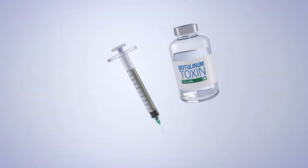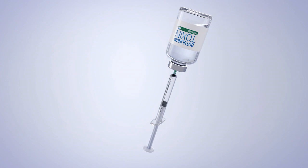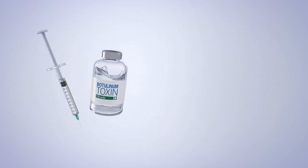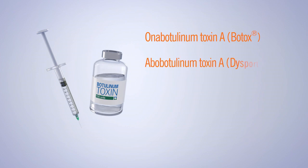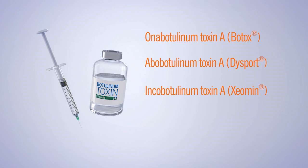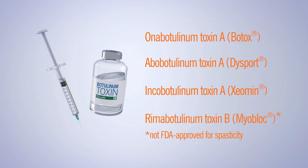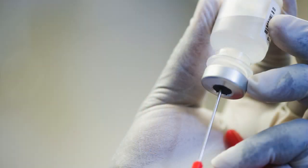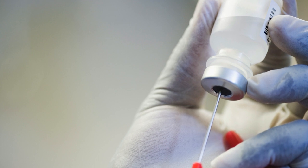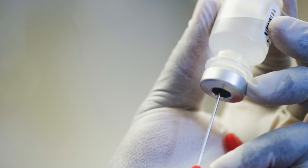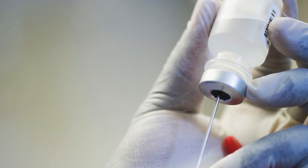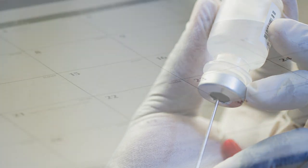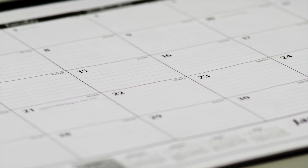Botulinum Toxin can be injected into spastic muscles. Preparations available in the U.S. include Onabotulinum Toxin A (Botox), Abobotulinum Toxin A (Dysport), Incobotulinum Toxin A (Xeomin), and Rimabotulinum Toxin B (Myoblock). These injections can reduce tone selectively in muscles where spasticity is most bothersome and are particularly helpful with focal spasticity. Although usually safe and well tolerated, in rare cases the effects can spread outside the injected muscles and cause complications. The effects typically take 7 to 10 days to become noticeable and last about 3 months.